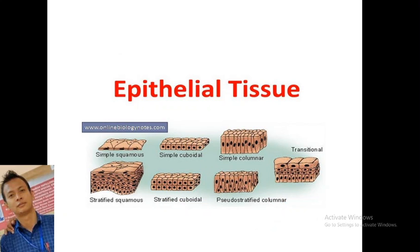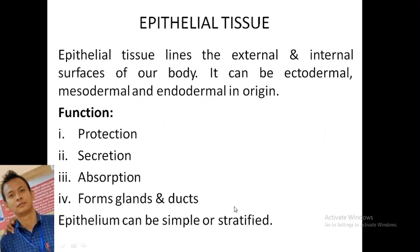Epithelium is a very important tissue type. You can see different types: simple squamous, simple cuboidal, simple columnar, transitional, stratified squamous, and pseudostratified columnar epithelium. Epithelium lines the external and internal surfaces of the body. It originates from ectodermal, mesodermal, and endodermal layers. Its functions include protection, secretion, and absorption from glands. Epithelium can be simple or stratified.